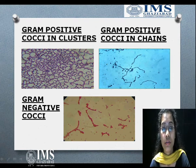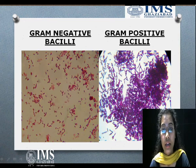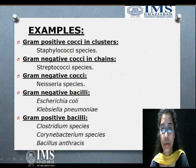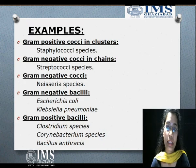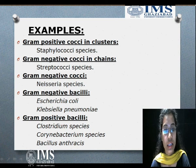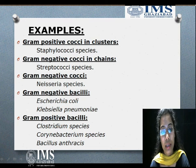There are some examples: gram-positive cocci in clusters, gram-positive cocci in chains, gram-negative cocci in clusters and chains, and gram-negative bacilli which are rod-shaped bacteria. Gram-positive bacilli are also rod-shaped. Examples include: gram-positive cocci clusters — Staphylococcus species; gram-negative cocci chains — Streptococcus species; gram-negative cocci — Neisseria species; gram-negative bacilli — E. coli, which is very common; and also Klebsiella, gram-positive Clostridium species, Corynebacterium, and Bacillus anthracis.